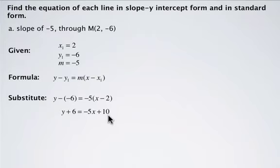Now what we have to do to put this into slope y-intercept form is isolate y. So we subtract 6 from both sides, and that simplifies to y equals negative 5x plus 4. That's in slope y-intercept form.